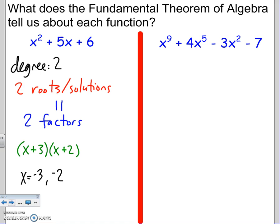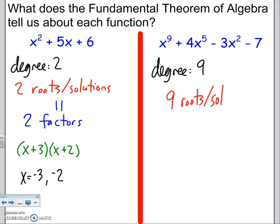On the right side: x to the 9th power plus 4x to the 5th minus 3x squared minus 7. I see the highest exponent is 9, so the degree is 9. If the degree is 9, that means there are 9 roots or solutions. There could be repeats — they don't have to be different; it could be a double, triple, or quadruple root. Remember, that's when it bounces off the graph. But if there are 9 roots, that means there are 9 linear factors, though there could be repeats.